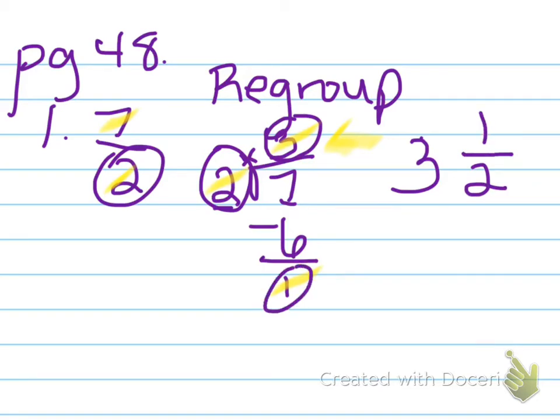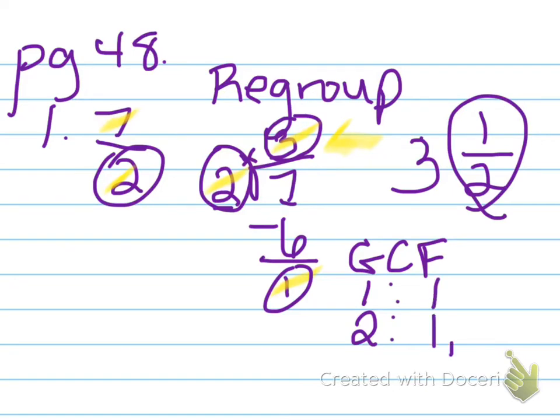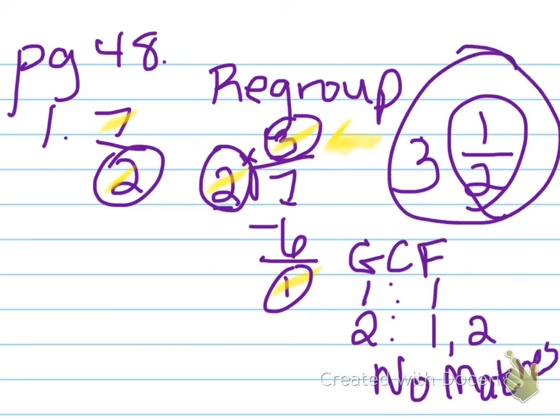Now, that doesn't mean we're done. We still need to check this fraction to see if we can simplify, which means we have to find the GCF. Let's find our factors of 1 and 2. 1 times 1 is the only thing that gives us 1. 1 and 2 for 2. There are no matches because 1 doesn't count. So 3 and 1 half is our final answer.